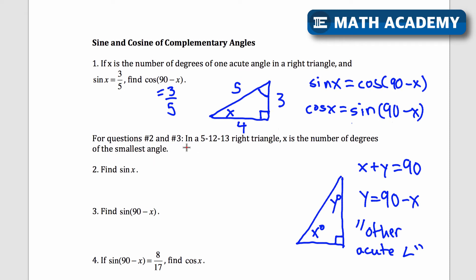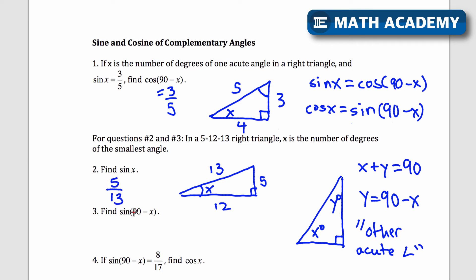For questions 2 and 3, in a 5-12-13 right triangle, x is the number of degrees of the smallest angle. Find sine of x. The smallest angle is across from the shortest side length, so the sine of x equals opposite over hypotenuse, which is 5 over 13. Find the sine of 90 minus x — that's the sine of the other acute angle, which is 12 over 13.